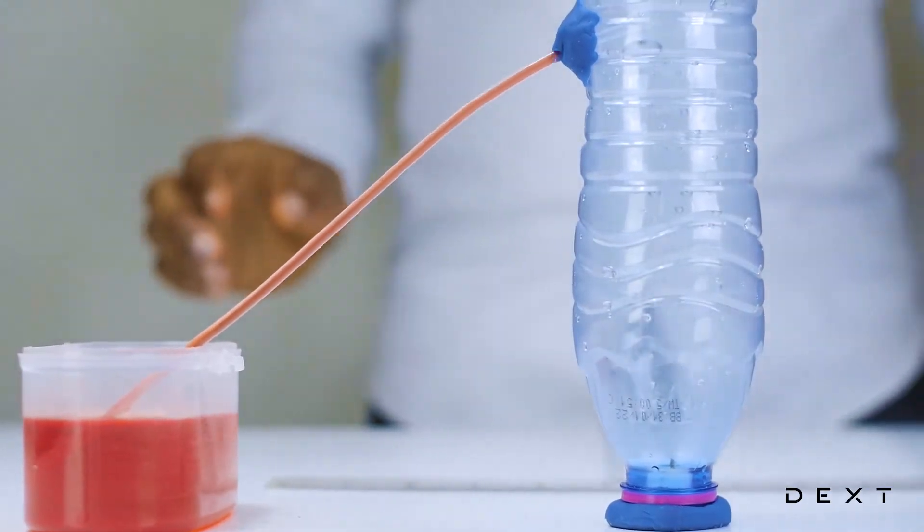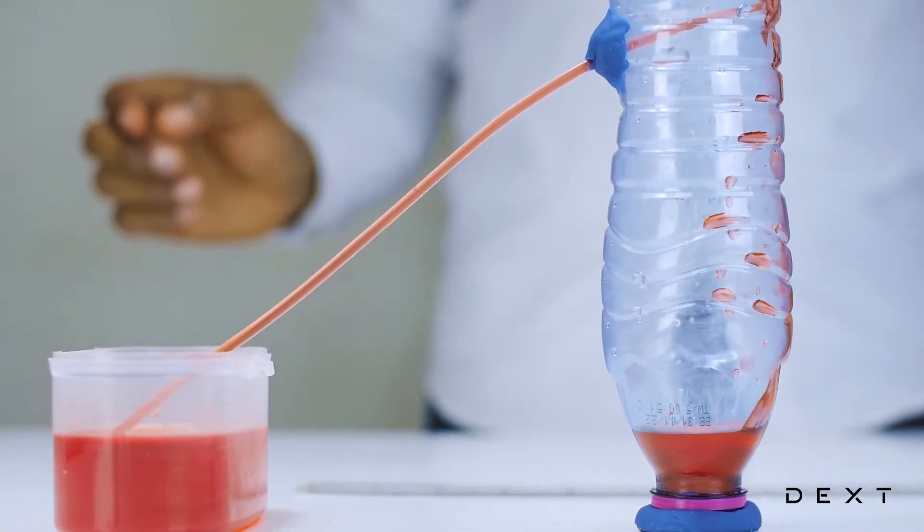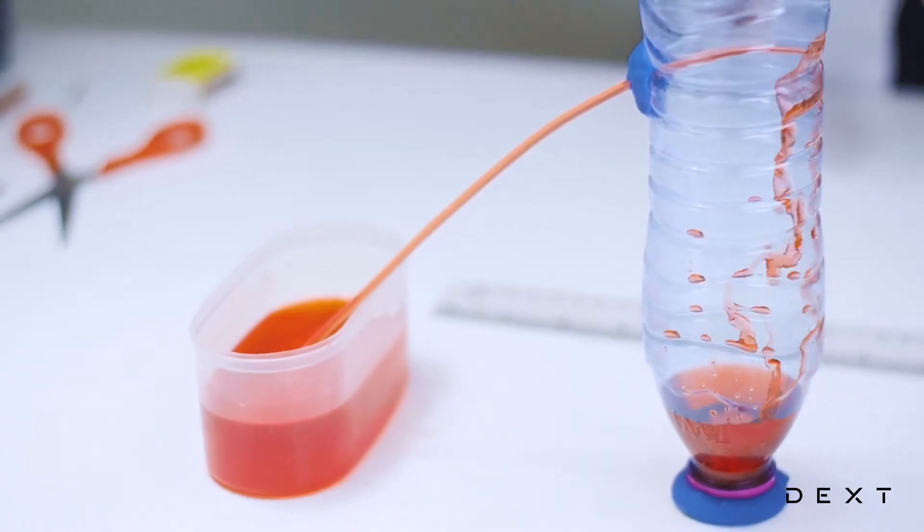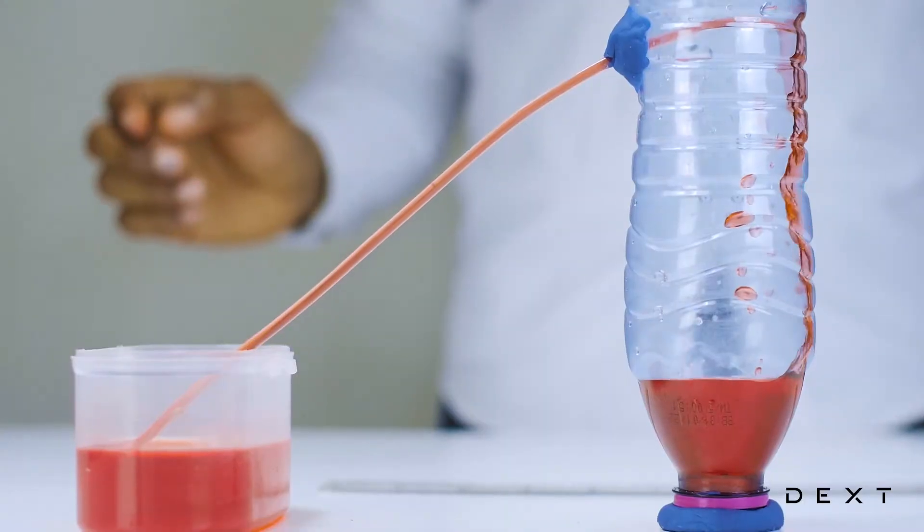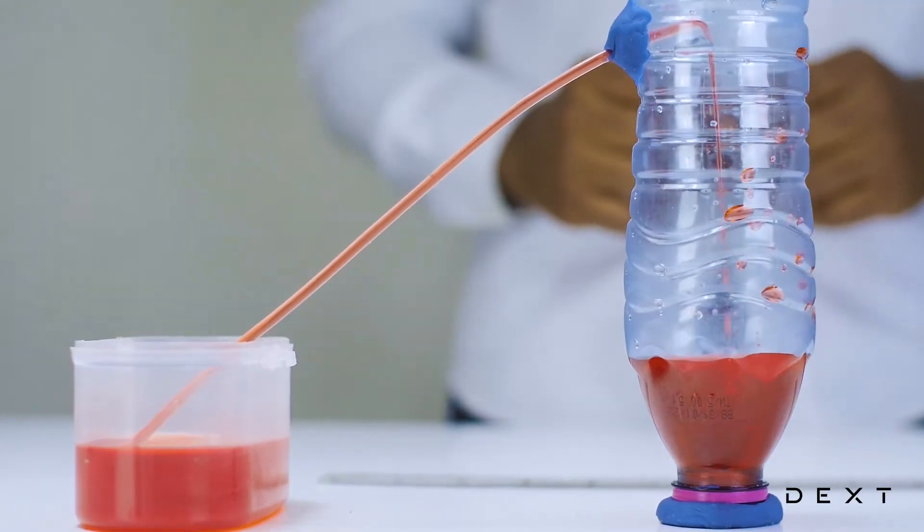Now as the candle goes off, you will see the water begin to rise through the tube and fill the portion of the bottle where the oxygen used to be. This is about 21% of the volume of the bottle.